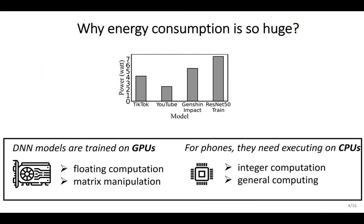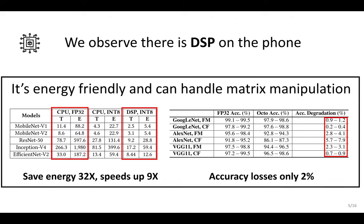DL models are typically optimized for GPUs, which excel at floating-point operations and matrix manipulations. However, mobile devices rely on CPUs that are designed for general computing, leading to inefficiencies when running DL models. DSPs present a solution, offering up to 60 times the energy saving and 9 times the speed of CPUs.